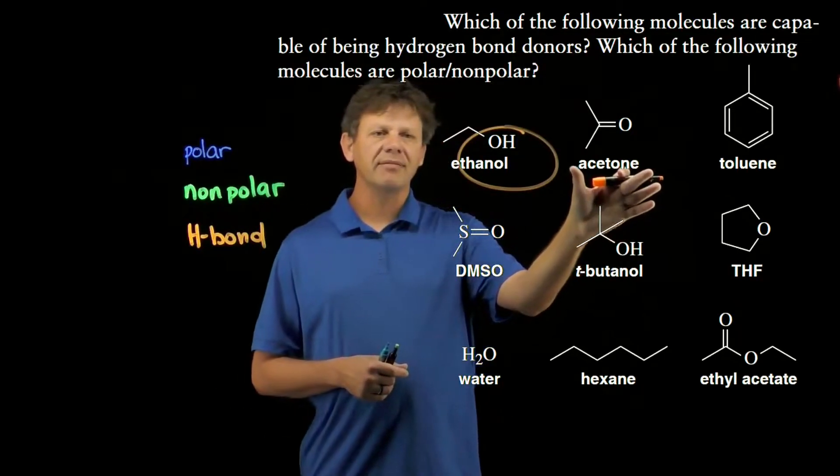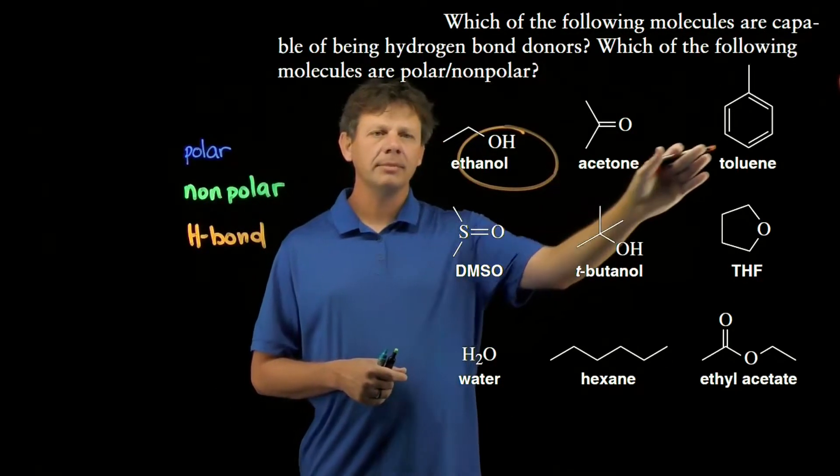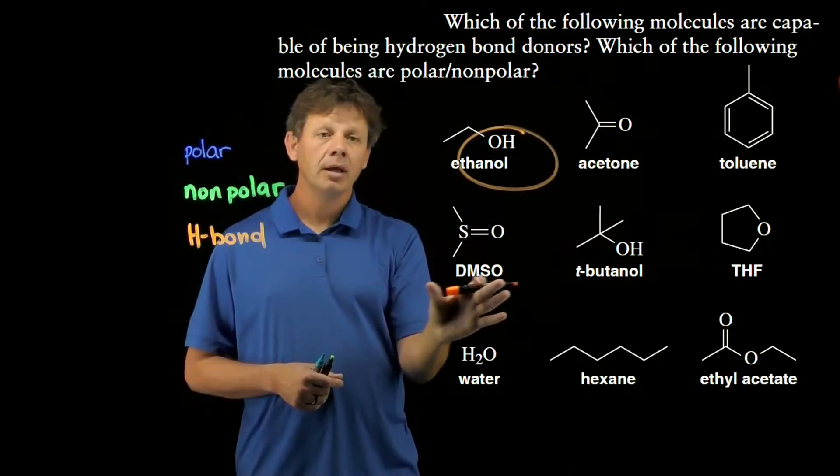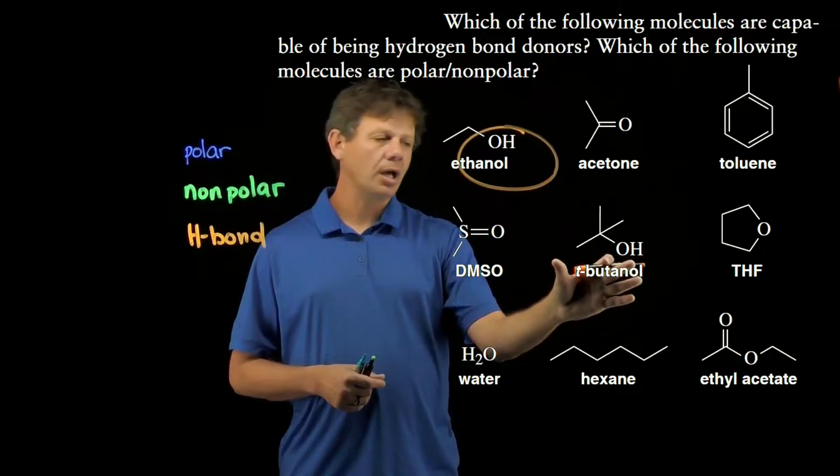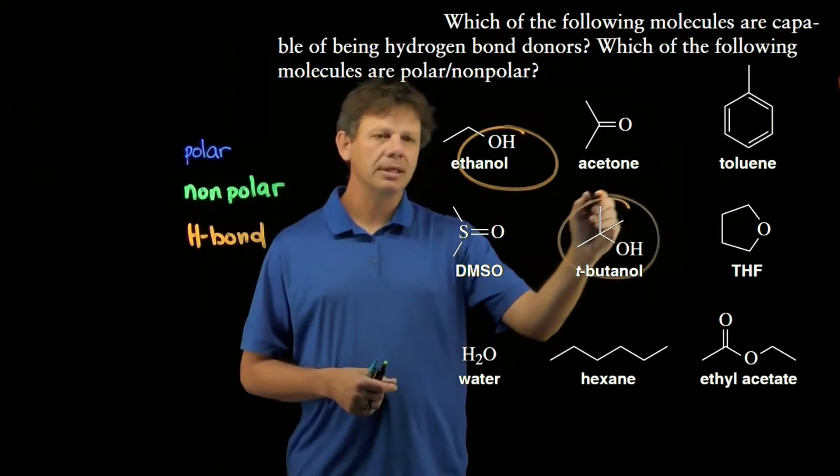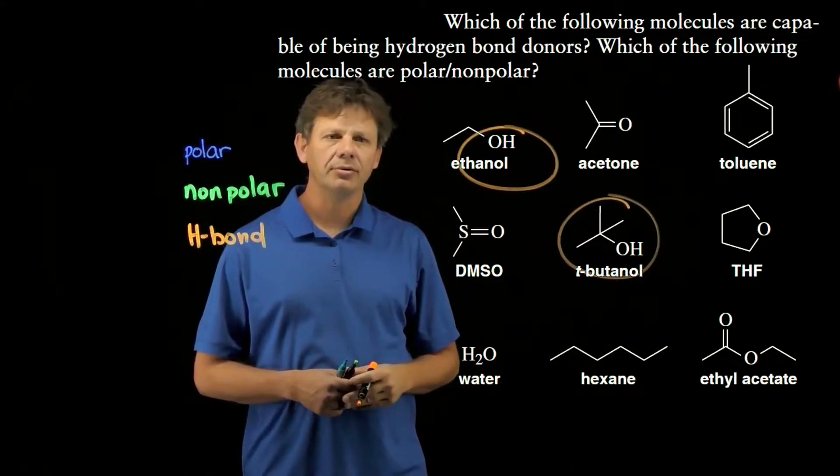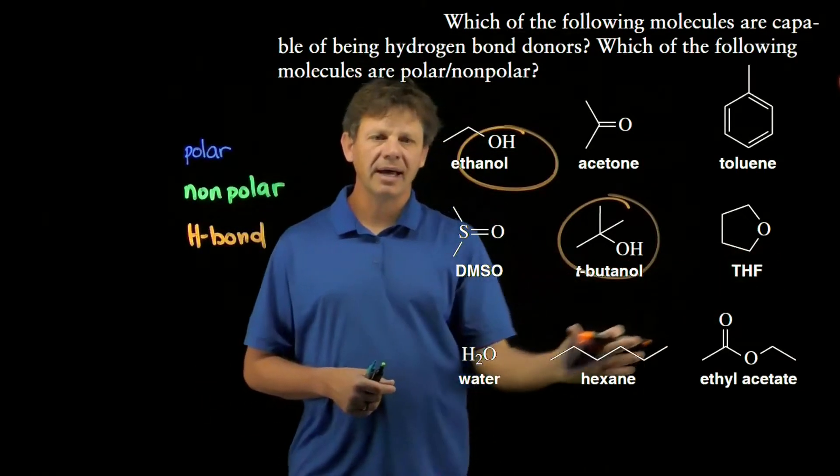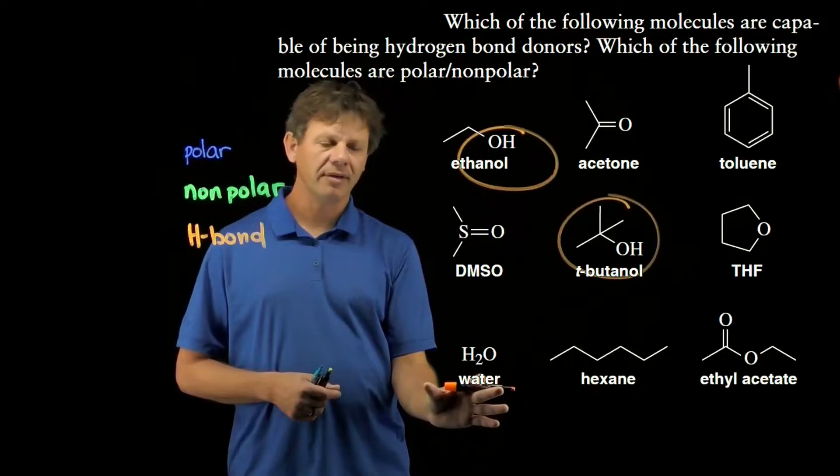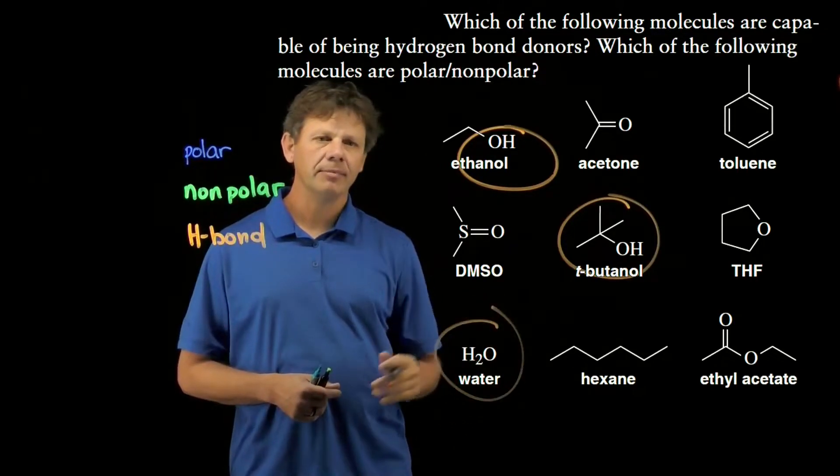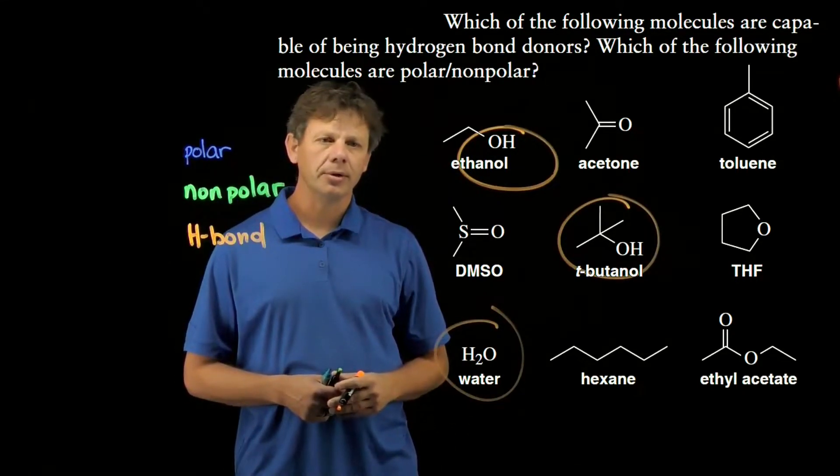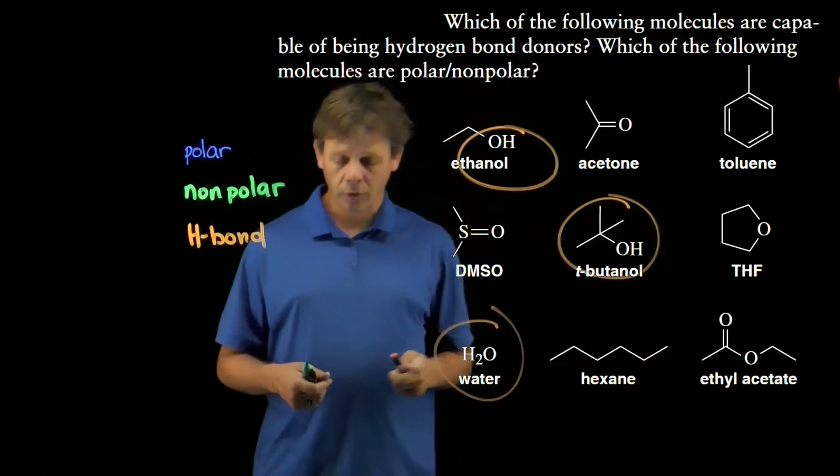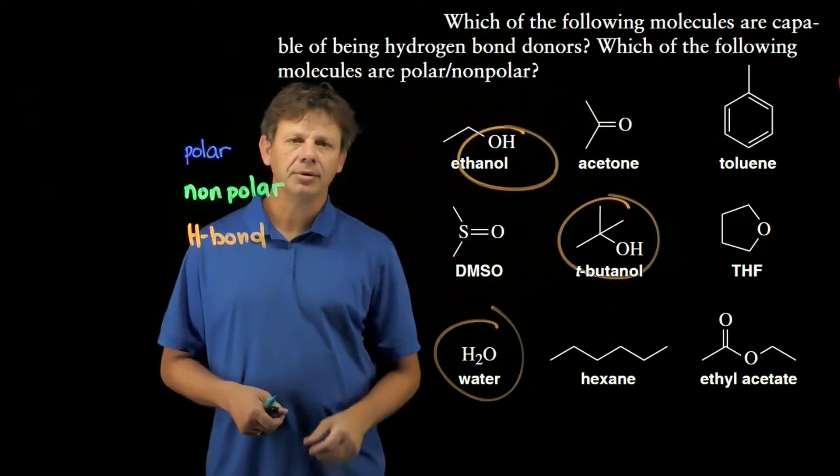If we look at acetone, it doesn't have a hydrogen attached to an electronegative atom, neither does toluene, neither does DMSO, but t-butanol has a hydrogen on oxygen, and so it's going to be another example of a hydrogen bond donor. THF has no hydrogen on an electronegative atom. Water does have a hydrogen on an electronegative atom, so it would be a hydrogen bond donor. Hexane does not. Ethyl acetate does not. Those are our three hydrogen bond donors.